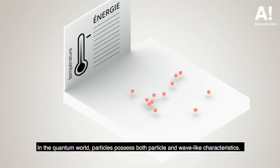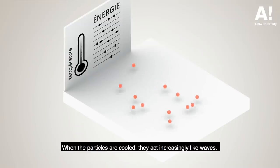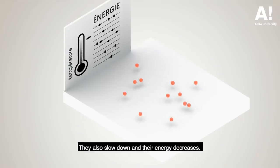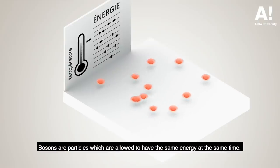In the quantum world, particles possess both particle and wave-like characteristics. When the particles are cooled, they act increasingly like waves. They also slow down and their energy decreases. Bosons are particles which are allowed to have the same energy at the same time.